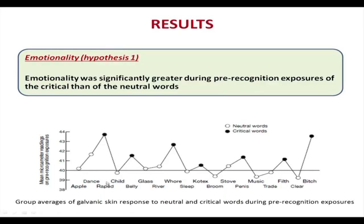The taboo words — rape, belly, whore, kotex (a sanitary napkin brand), penis, filth, and bitch — showed higher arousal levels. Common sense might suggest that higher arousal would mean these words are seen earlier, but that is not true. This shows that perceptual defence — something that blocks them — actually stops the individual from becoming consciously aware of the stimulus. Becoming visually and consciously aware of these stimuli takes significantly more time.